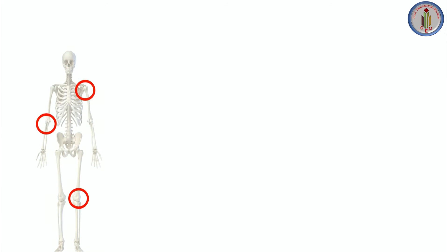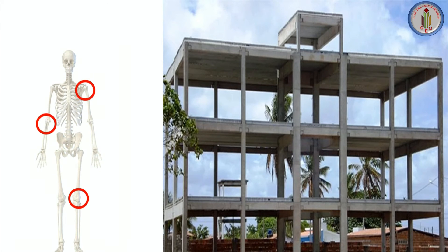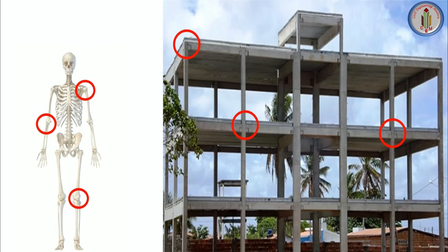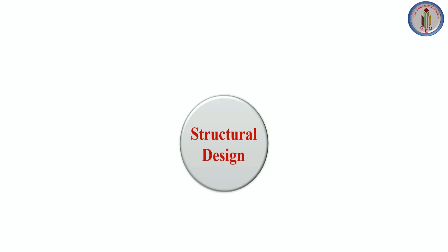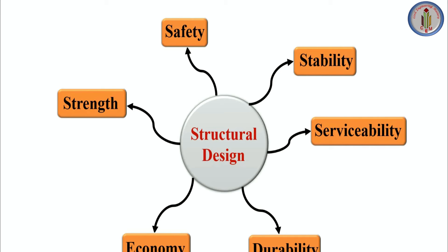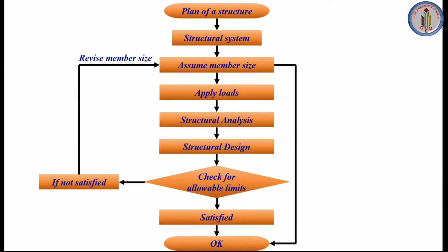Consider a human body — it has bones of different shapes and sizes, all connected with joints, and functions similarly to a structure. A structure has structural members like beam, column, slab, and footing, all connected with joints. The main function of the structure is to carry loads during its lifetime without damage. Structural design is an iterative process applying engineering mechanics and past experience to create a functional, economic, and safe structure. Strength, safety, stability, serviceability, durability, and economy are the important factors of structural design.